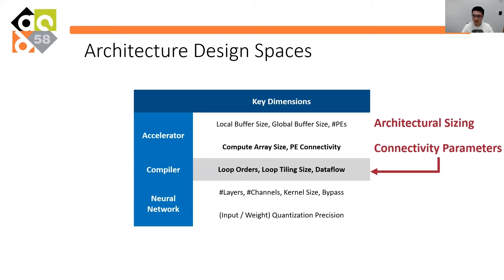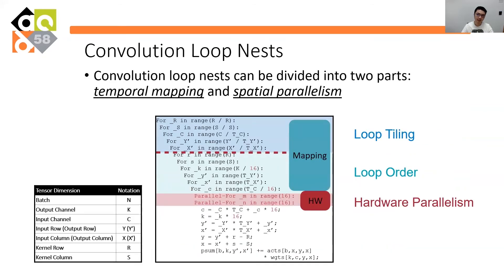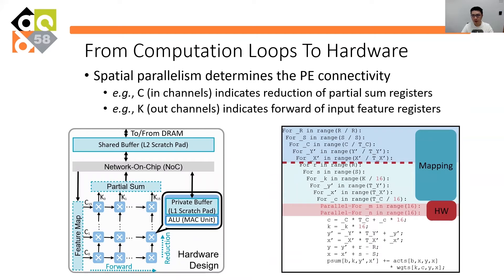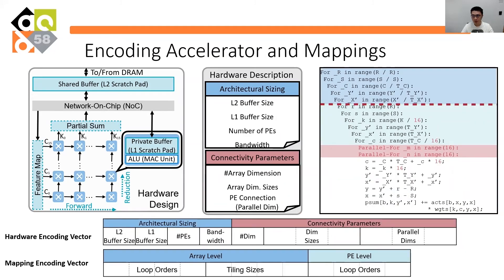We first investigate the LoopNest of convolution, which can be divided into two parts: temporal mapping and spatial mapping. Loop tiling and loop ordering are reflected in the temporal mapping, and the spatial mapping can be inferred from the parallelism. The PE connectivity can be modeled as the choice of parallelism. For example, two parallel dimensions indicate a 2D array. Parallelism in input channels means a reduction connection of the partial sum accumulation register inside each PE. Parallelism in output channels means a broadcast to the input feature register inside each PE. The selection of dimensions and loop ordering can be represented by predefined index values, so PE connectivity can be represented by a limited number of numerical values.